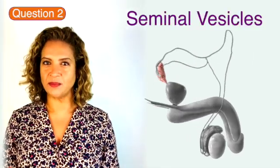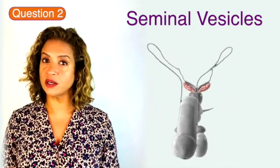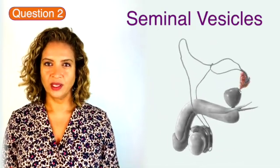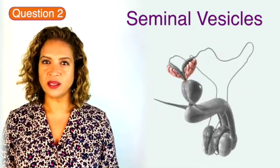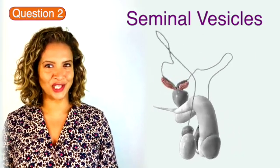Question two are the seminal vesicles that form part of the male reproductive system. They produce fluid that makes up 70% of ejaculation fluid.